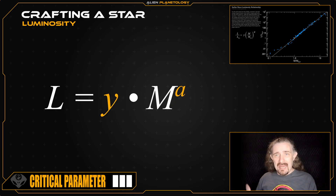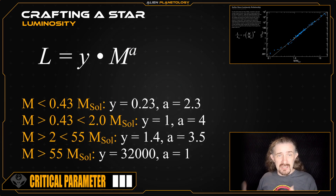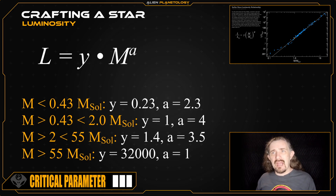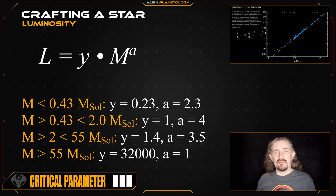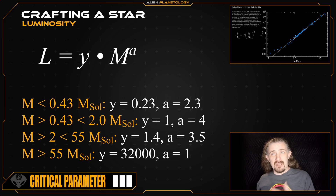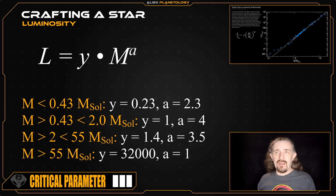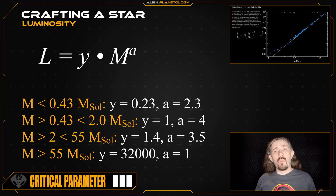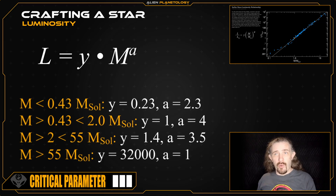Secondly, the Y and A terms seen here in the equation are just variables that change depending on what mass range our star falls into. For stars with a mass of less than 0.43 solar masses, Y will have a value of 0.23 and A will have a value of 2.3 — be careful with these values, they look similar so they are easy to get confused. For stars with a mass greater than 0.43 solar masses but less than 2 solar masses, Y will have a value of 1 and A will have a value of 4. And for stars between 2 and 55 solar masses, Y will be 1.4 and A will be 3.5.